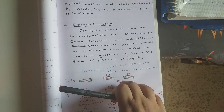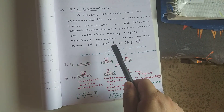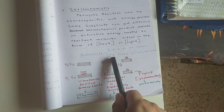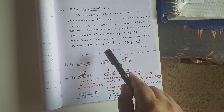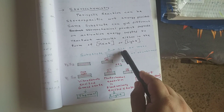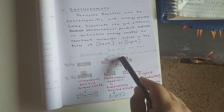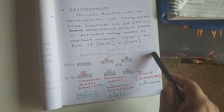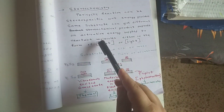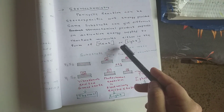Regarding stereochemistry: pericyclic reactions are stereospecific with respect to the energy provided. For example, if a substrate gives a cis product when heated, the same substrate gives a trans product when given light energy. Same substrate can give different stereochemical products depending on whether activation energy is supplied as heat or light.